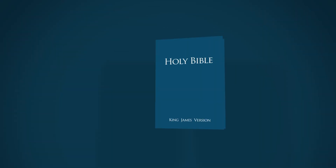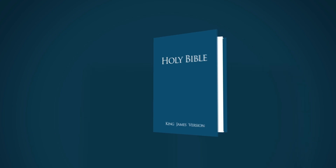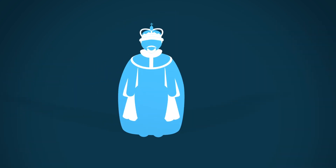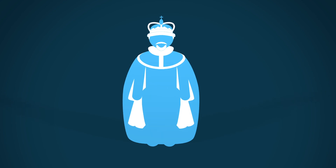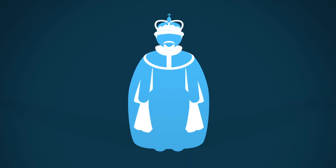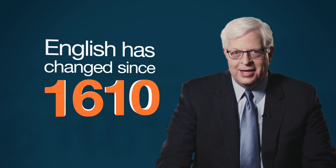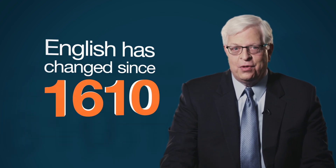So why did the King James translation of the Bible use the word kill rather than murder? Because 400 years ago, when the translation was made, kill was synonymous with murder. As a result, some people don't realize that English has changed since 1610, and therefore think that the Ten Commandments prohibits all killing. But of course it doesn't.